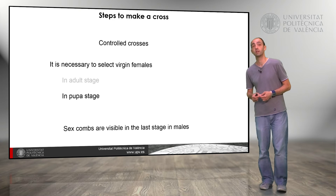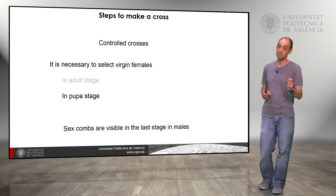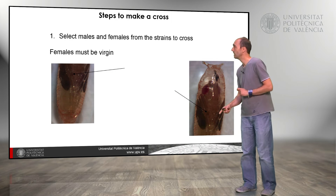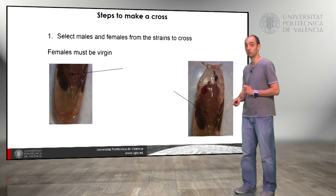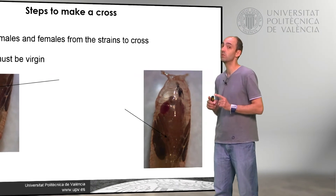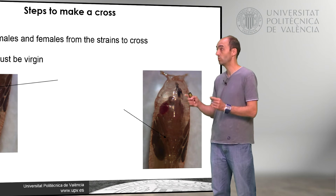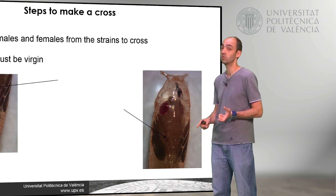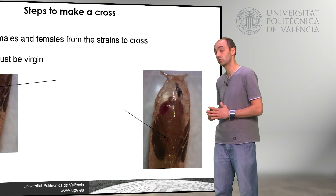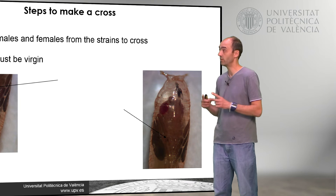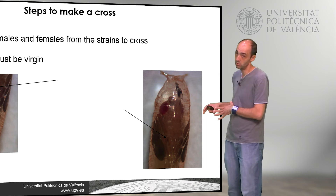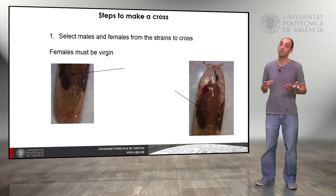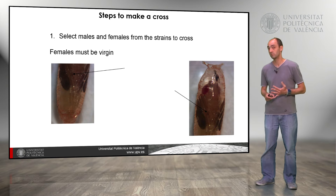Or we can use selection at the pupa stage. In the pupa stage we can see the sex combs. The sex combs are visible only in males — here we have a pupa and in the first pair of legs we can see the sex combs. So if we select a pupa in the last stage and we see the sex combs, we are talking about a male and we have to discard that pupa. If we do not see the sex combs, we are talking about a female — we can place that pupa in the bottle where we are going to make the cross, and the female that arises from that pupa will be virgin.